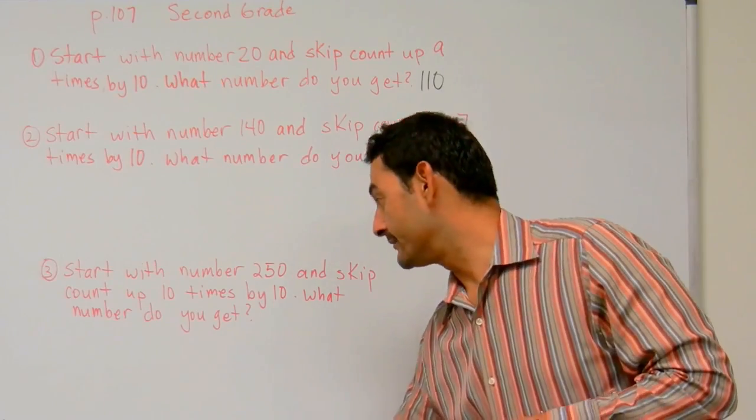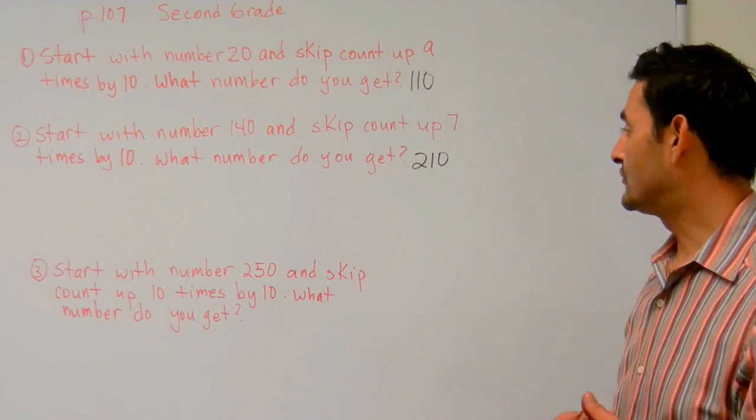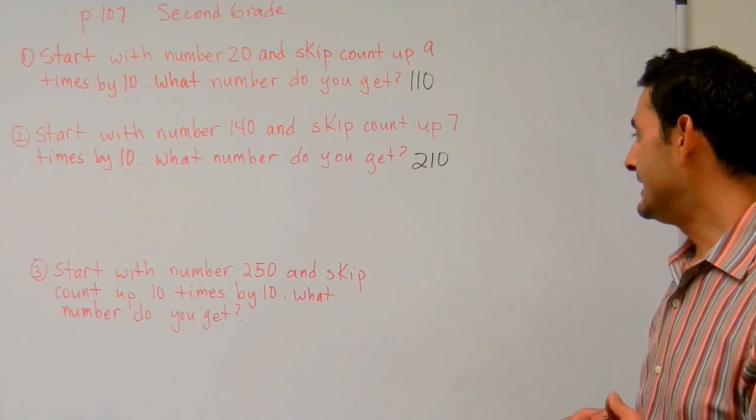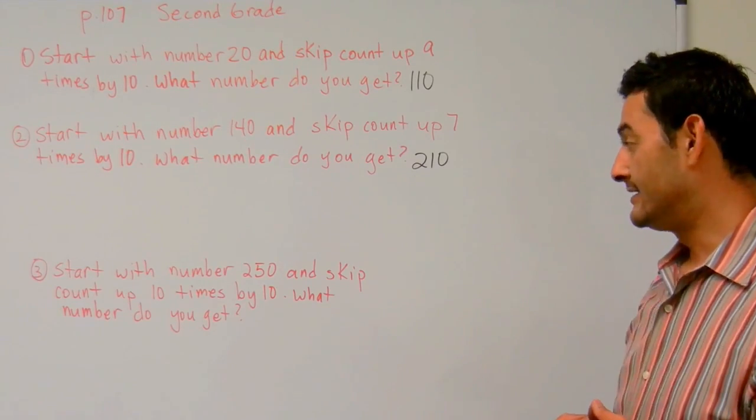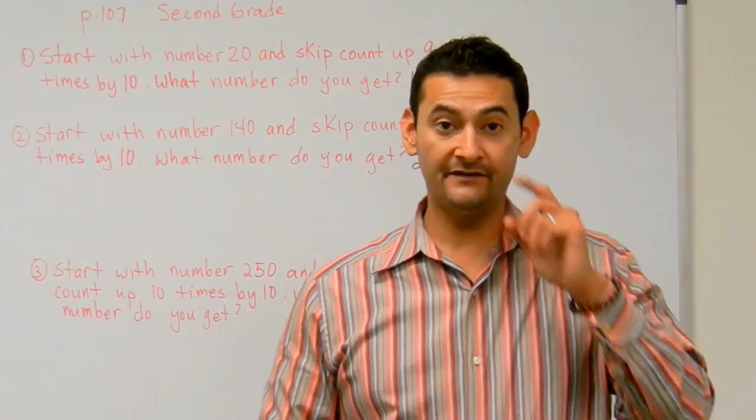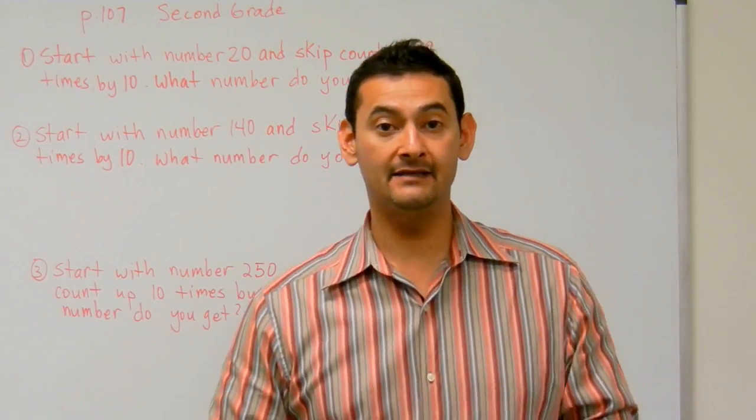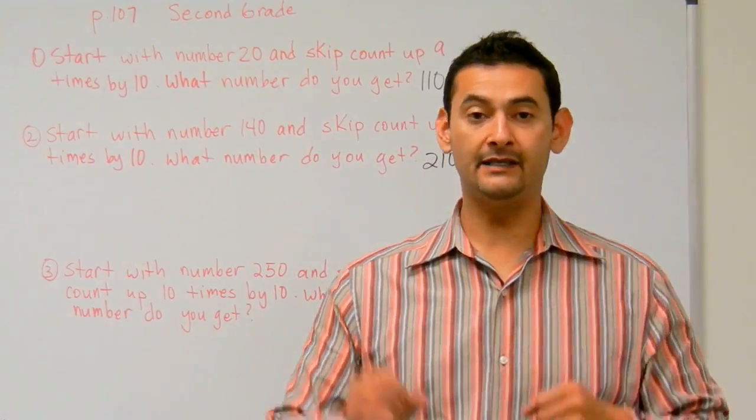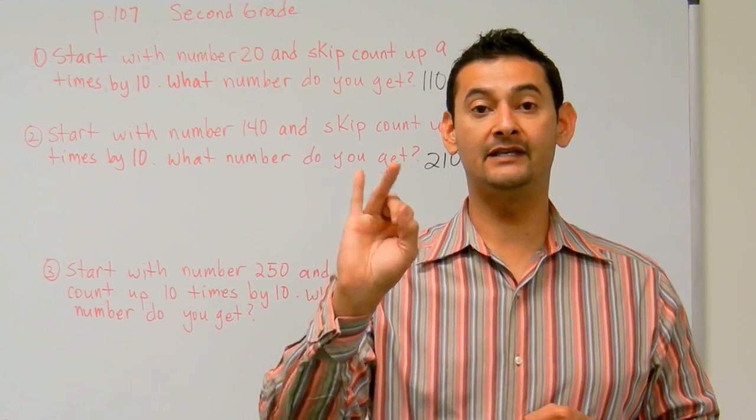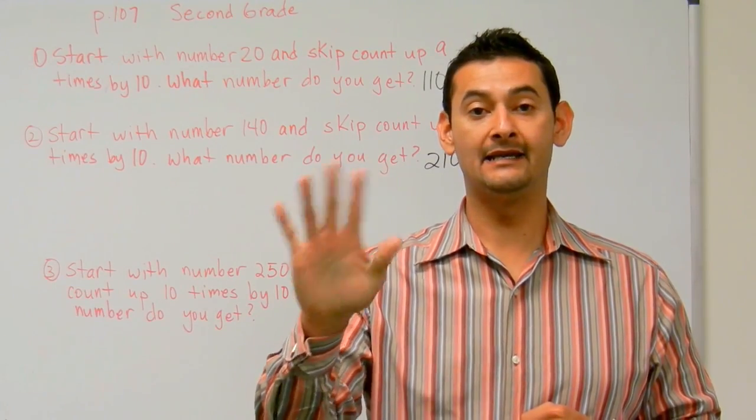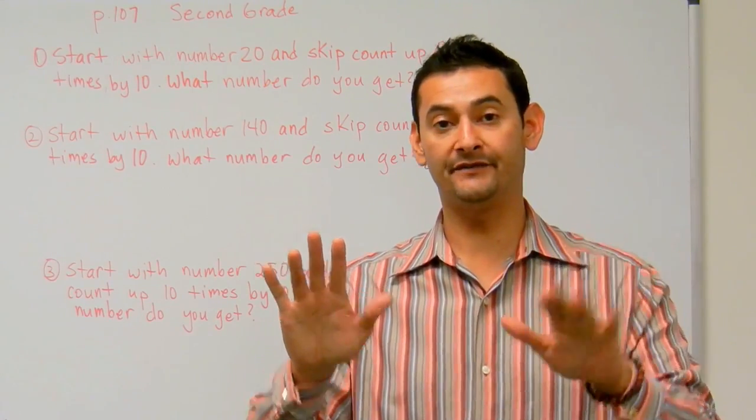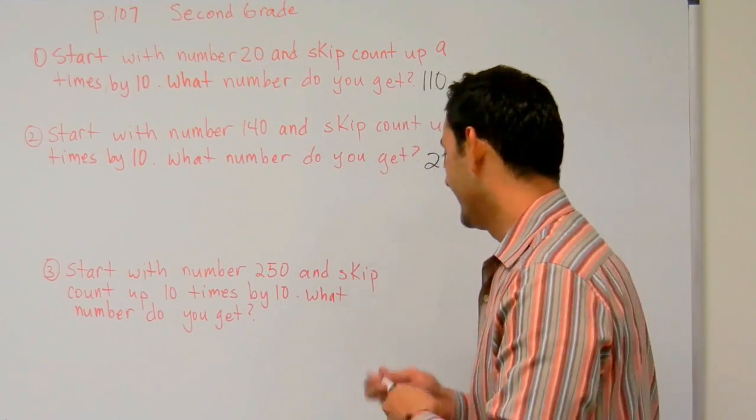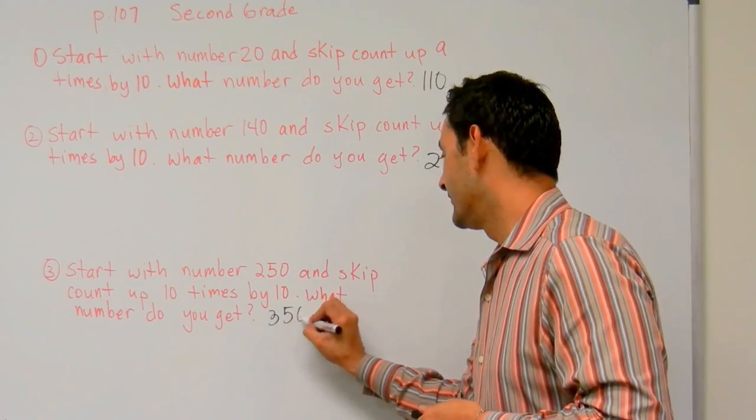And finally, let's take a look at number three. That reads, start with number 250 and skip count up ten times by ten. What number do you get? So let's go ahead and let's get started. At 250, we're going to skip count ten times by ten. So let's do it. 250, 260, 270, 280, 290, 300, 310, 320, 330, 340, 350, okay? And there you go, 350.